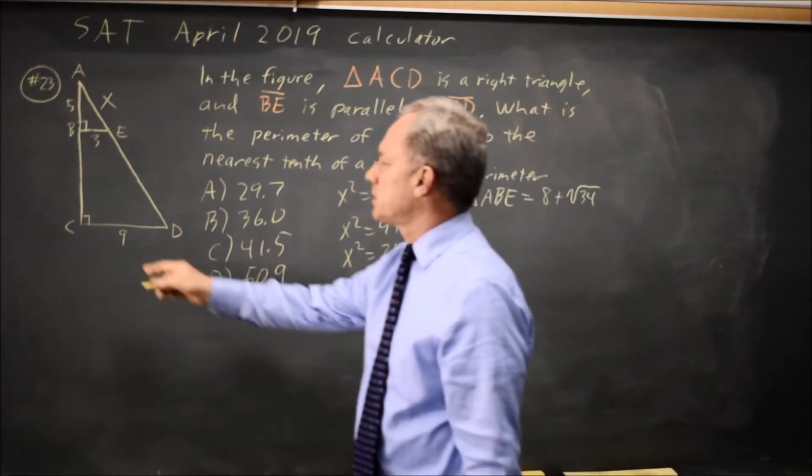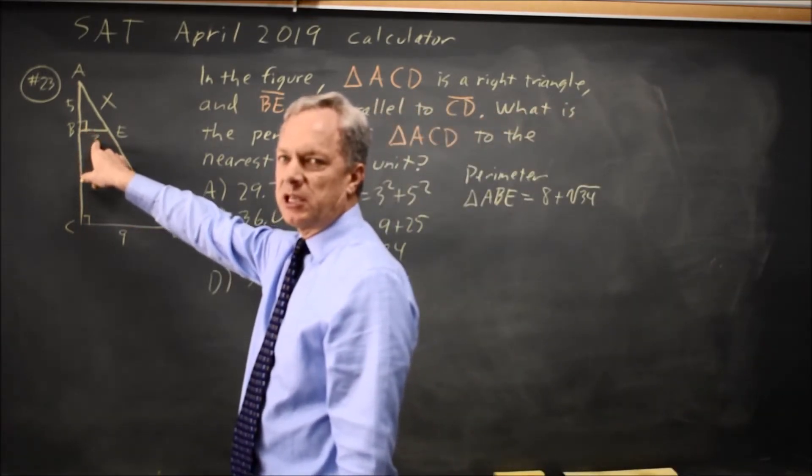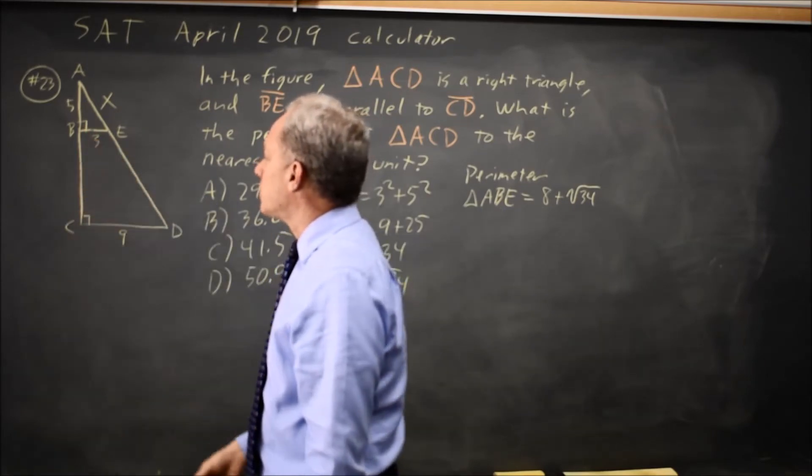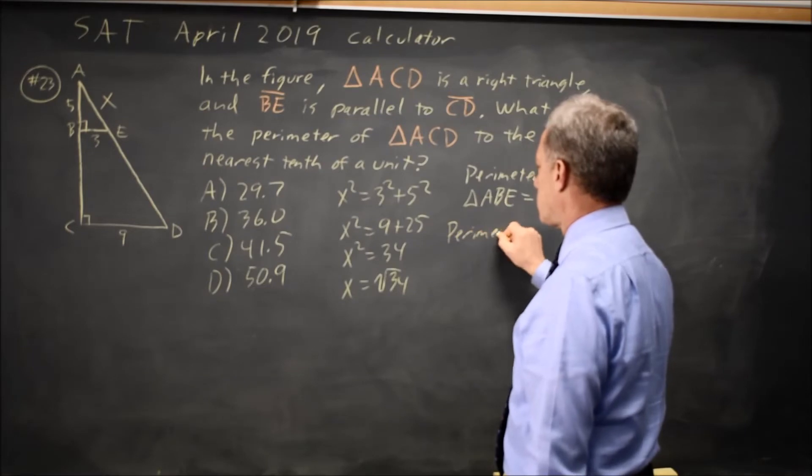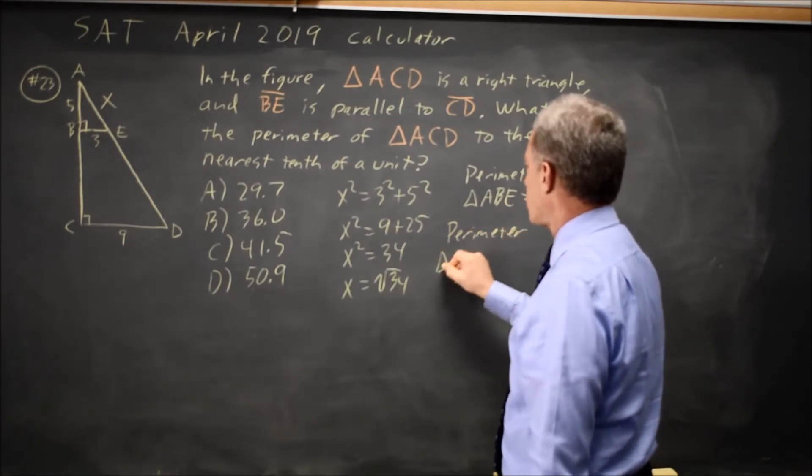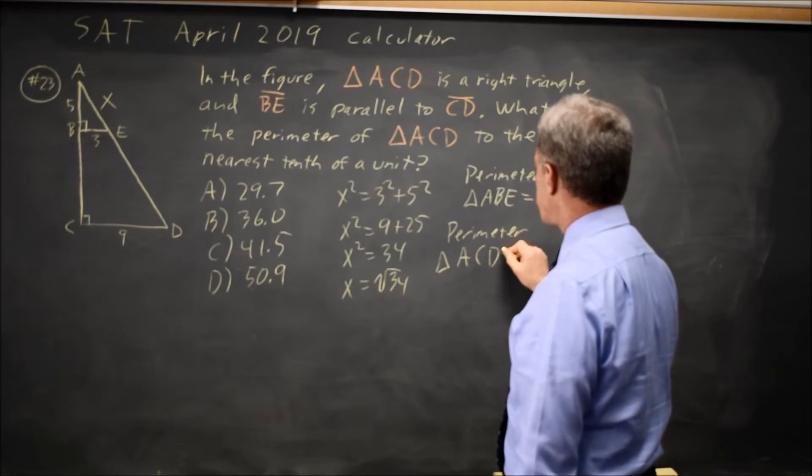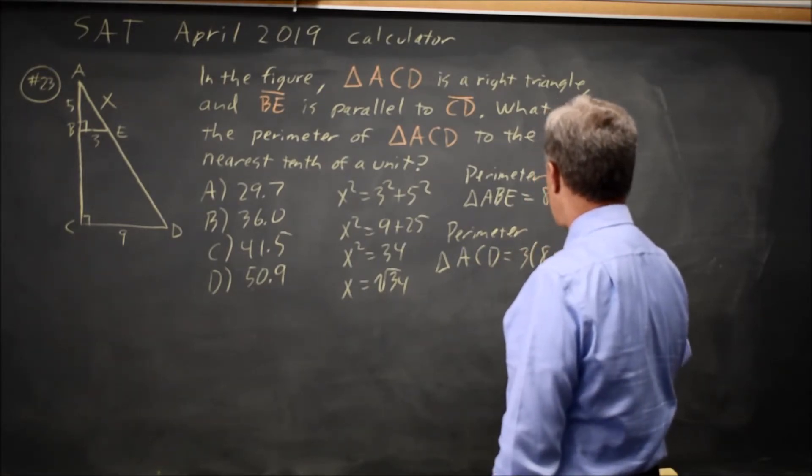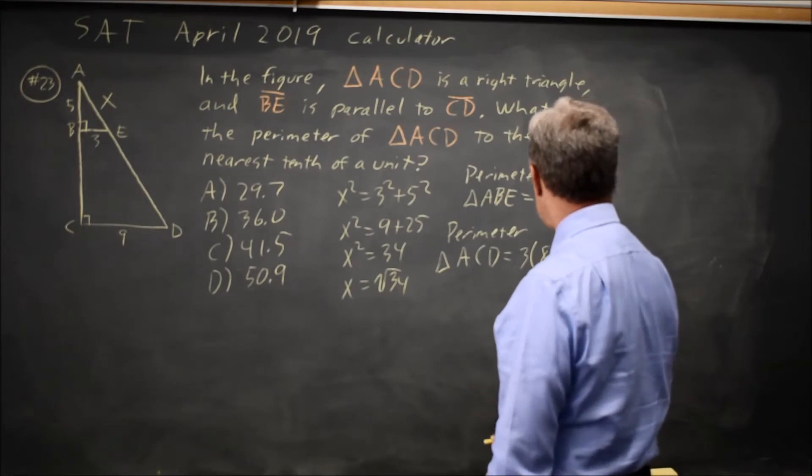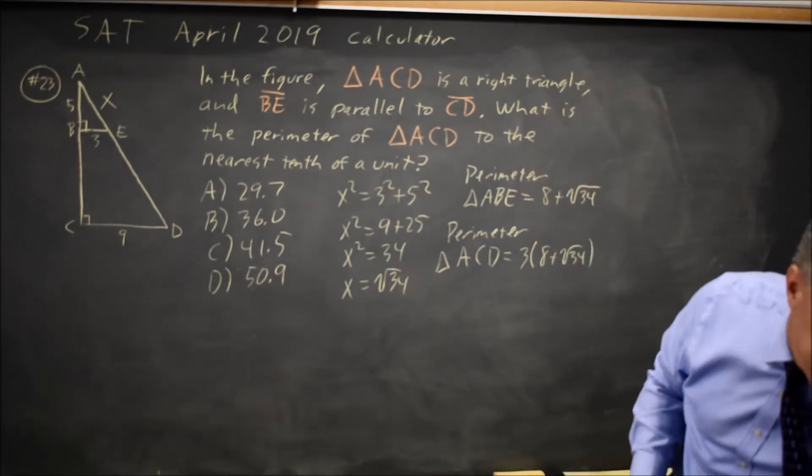Since side CD is 3 times as long as side BE, and these are similar triangles, the perimeter of the larger triangle ACD is 3 times (8 plus root 34), which is time for my calculator.